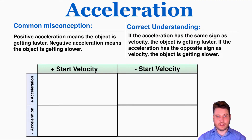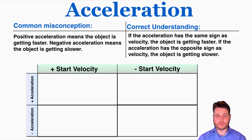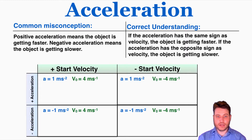The correct understanding is that if the acceleration has the same sign as velocity — if it's pointing in the same direction — the object is getting faster. If the acceleration has the opposite sign as velocity, the object is getting slower over time. I've made a table to demonstrate this: the columns show a positive or negative starting velocity, and the rows show either a positive or negative acceleration, so we can observe how each combination changes over time.